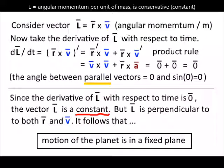Consider vector L equal to r cross v. Vector L measures angular momentum per unit of mass. Now, taking the derivative of vector L with respect to time, we have, by the product rule, the derivative of the first cross the second plus the first cross the derivative of the second. Vector r prime is velocity, vector v prime is acceleration.